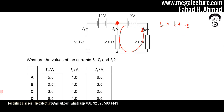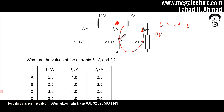Now coming to Kirchhoff's second law — conservation of energy — the voltage supplied by the battery equals the energy consumed by the elements. In this small 9 volt circuit, the voltages across all elements are going to be equal. So we have i2 multiplied by 2 ohms, and then current i3 multiplied by 2 ohms, giving us: 9 = 2·i2 + 2·i3.